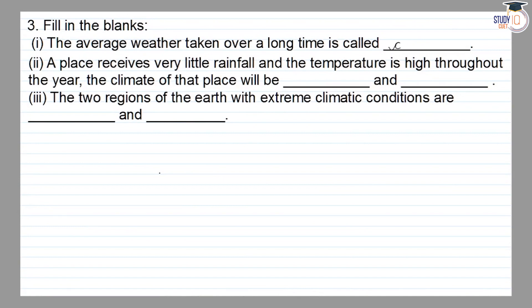A climate is a place that receives very little rainfall and the temperature is high throughout the year. The climate that place will be hot and dry.